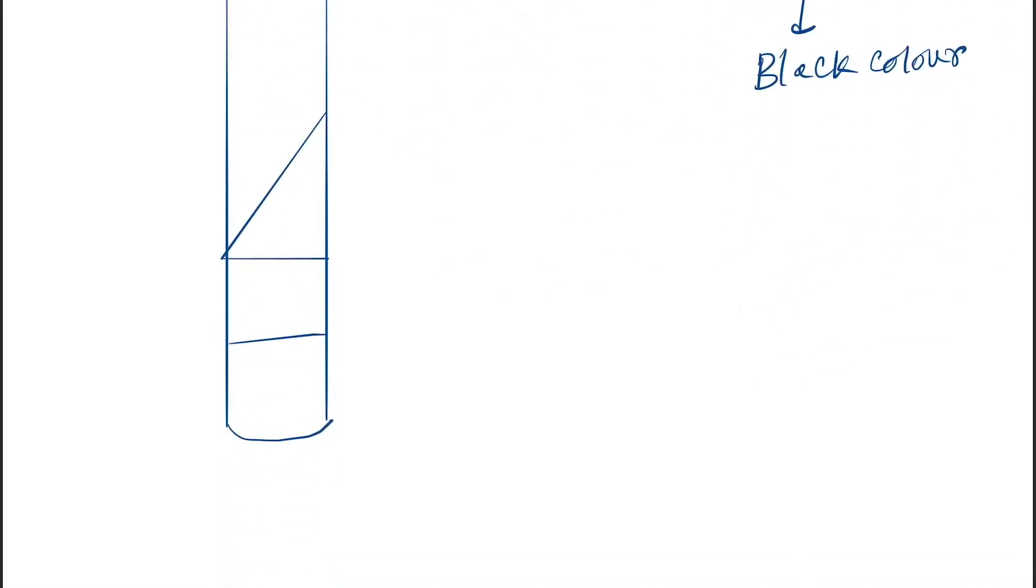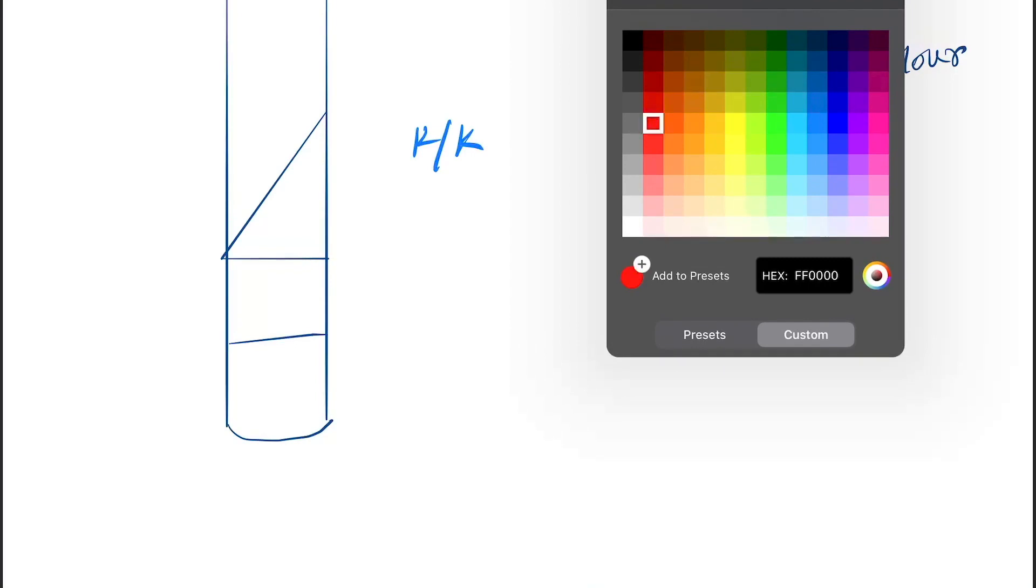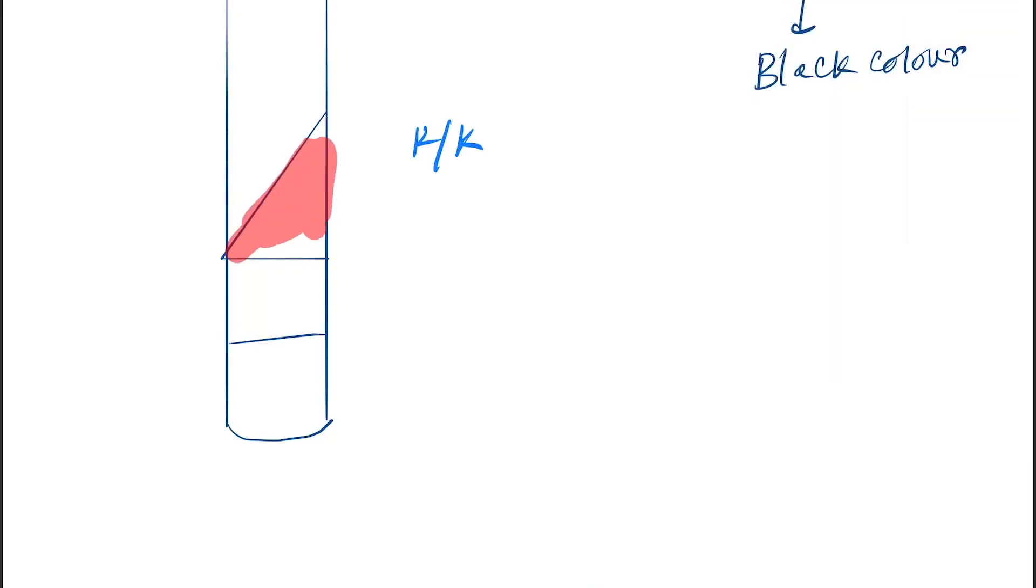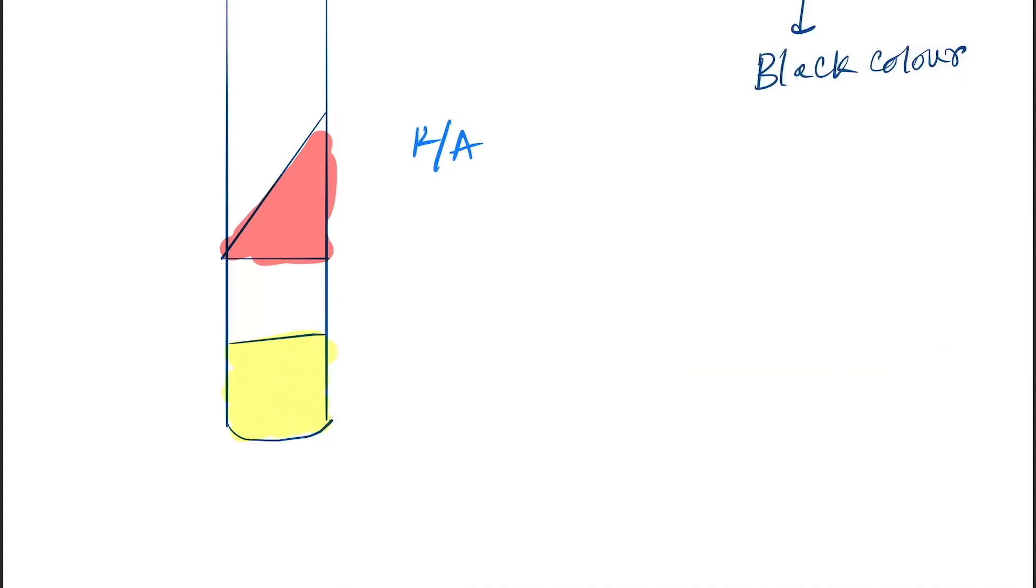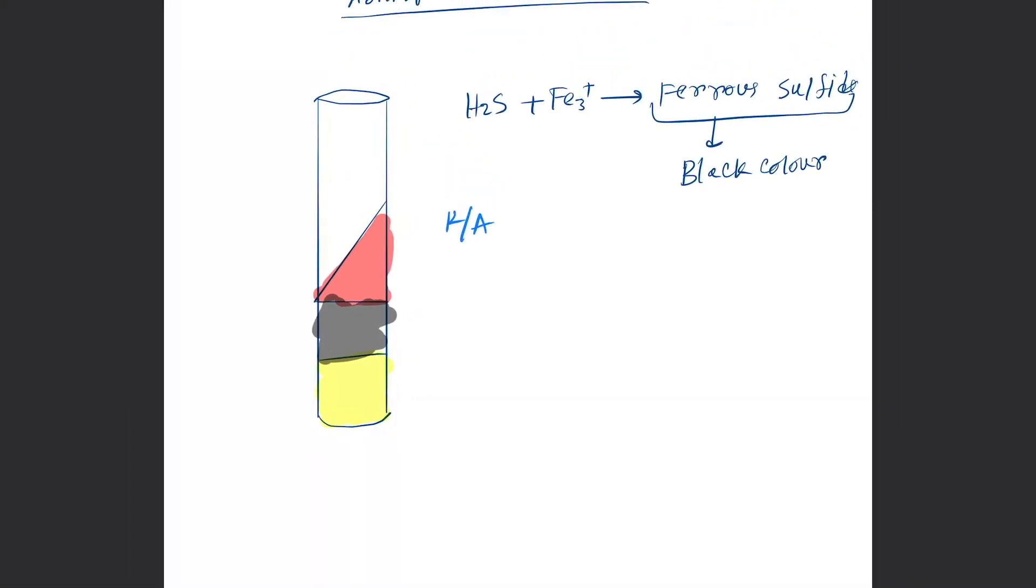Let's show the black color. Suppose we take this test—this is K by K. Actually, this should be K by A. K by A means slant is red and butt is yellow. Suppose this is the formation of H2S gas, so the medium will appear like this.